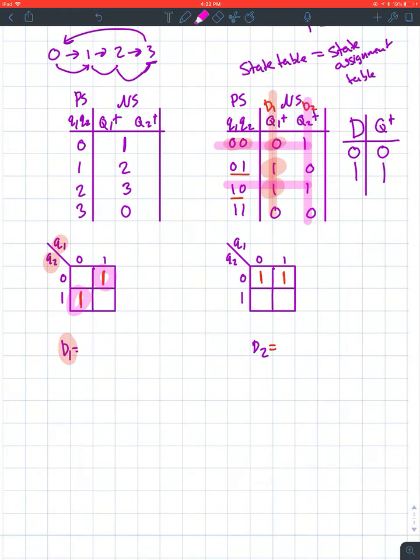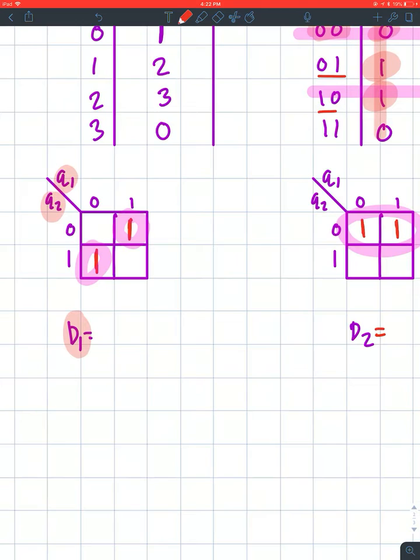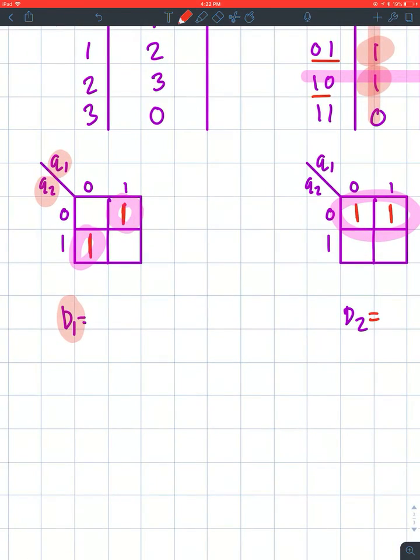Now I have to group them. These don't group—you can't group them by corners, you have to group them individually. This one can group together. For D1 equation, the upper right corner cell is Q1 and Q2 not, plus Q1 not and Q2. This is the same as Q1 exclusive OR Q2.